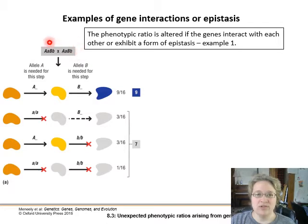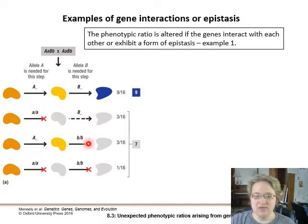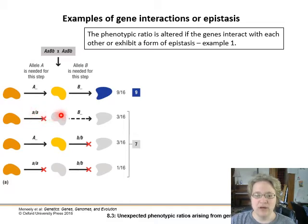With this F1 cross of our heterozygotes, the majority are going to wind up with the full functional pathway — they'll have a copy of functional allele A and functional allele B, and that gets us our 9 out of 16. What happens is if in any case we have a homozygous recessive pair, that means we don't have a functional allele for that particular gene, so the step is broken.